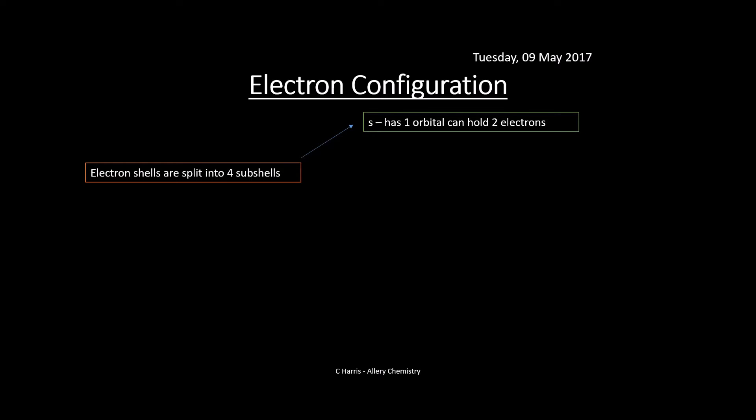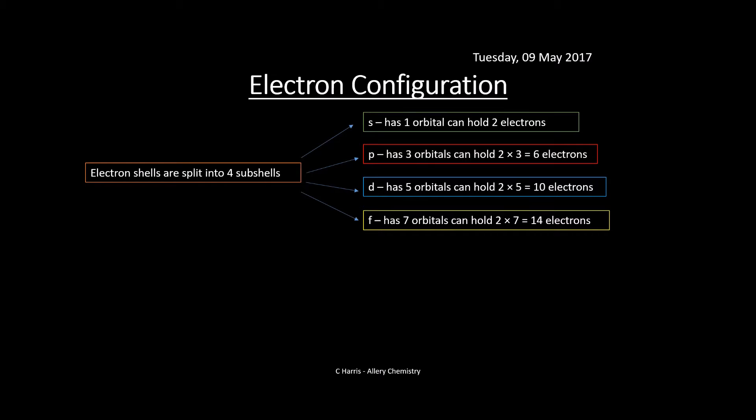The first subshell is the S subshell. It has one orbital and can hold two electrons. The P subshell has three orbitals and can hold two electrons in each, that's six electrons total. The D subshell has five orbitals, each holding two electrons, that's 10 electrons total. The F has seven orbitals holding two electrons each, so that's 14 electrons in the F block.